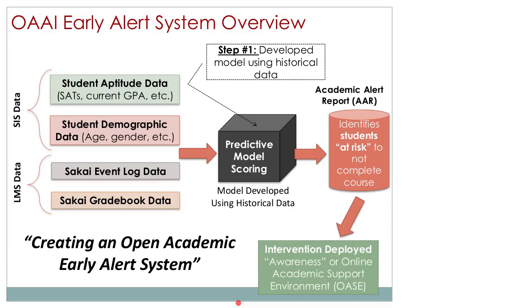We worked with two primary data sets: data from our student information system — primarily student aptitude and demographic data — and data from our learning management system, including event log data and gradebook data. Using many semesters worth of data and machine learning algorithms, we produced a predictive model that we rolled out to a number of institutions as part of our research study. In near real-time, data from courses flows into the predictive model; a scoring process identifies at-risk students; and the instructor receives an academic alert report identifying those students who need help.